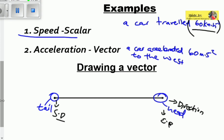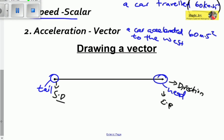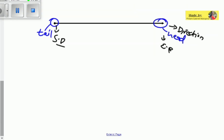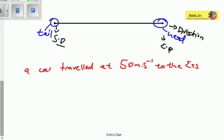Remember, a vector is a physical quantity with both magnitude and direction. For a practical example: a car traveled at 50 meters per second to the east. This is no longer just speed — it's now called velocity. Velocity and speed go hand in hand because they are practically measuring the same thing. But here we have the magnitude of speed with direction, and that is called velocity. So the velocity here is 50 meters per second to the east. Velocity is a vector, while speed is a scalar.